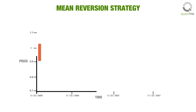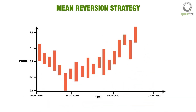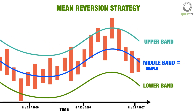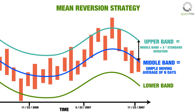We will use Bollinger Bands to determine entry and exit points. Bollinger Bands consist of a middle band, upper band, and lower band. The middle band is a simple moving average for the past 10 days. The upper band is plus x standard deviations above the middle band, and the lower band is minus x standard deviations below the middle band.